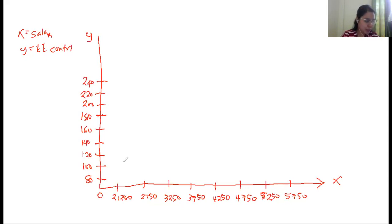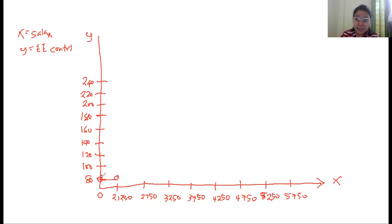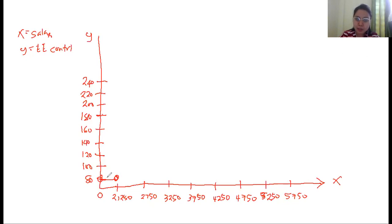Let's start with the first piece: if the salary is below 2,250, the contribution is 80 pesos. Draw a circle at 80 on the y-axis and at 2,250 on the x-axis, then join them. Since zero salary is not practical, the line starts just above zero. Since 2,250 is not included, leave the circle unshaded. This means whether your salary is 2,000 or 1,000 pesos, you will still pay 80 pesos.